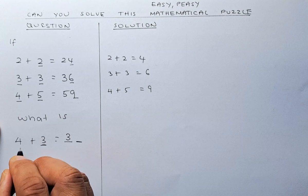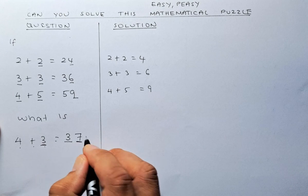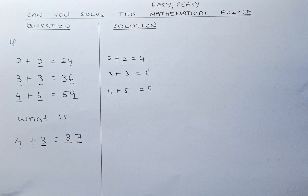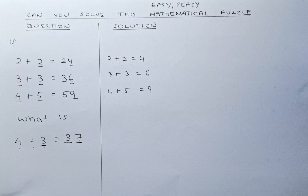And the second digit will be 4 plus 3, and that will be 37. So if you get 37, well done. If not, don't be disheartened. Try again next time, and I'll give you more puzzles. Cheers everyone, and have a good day!